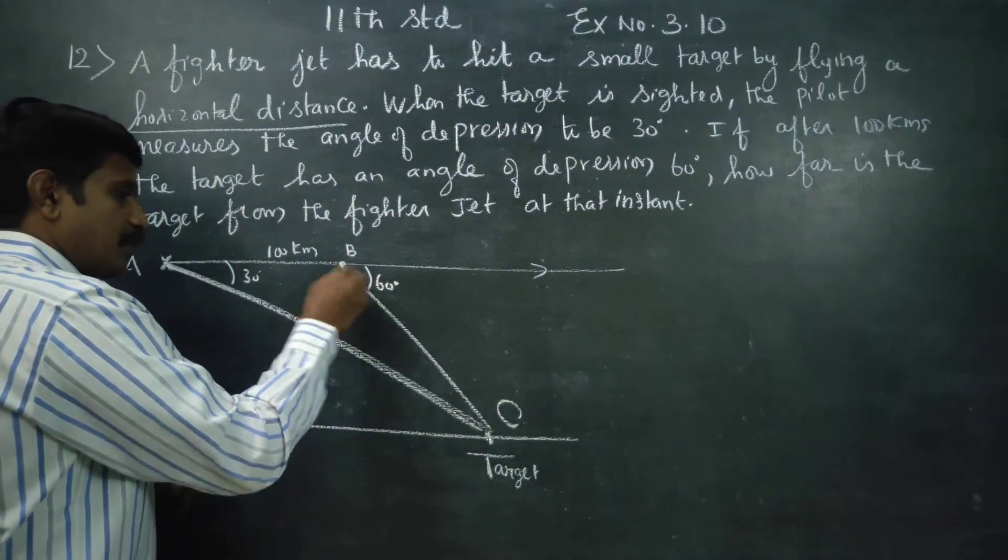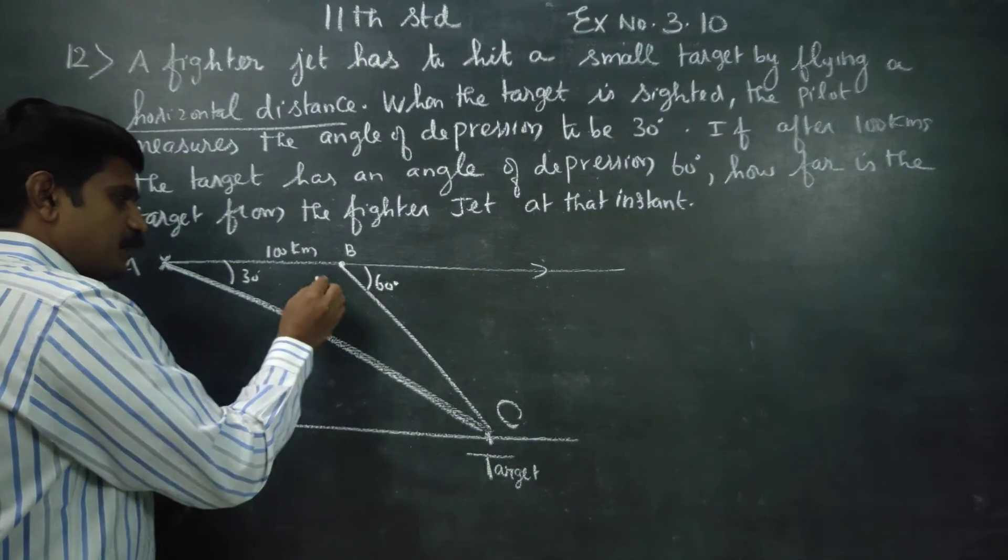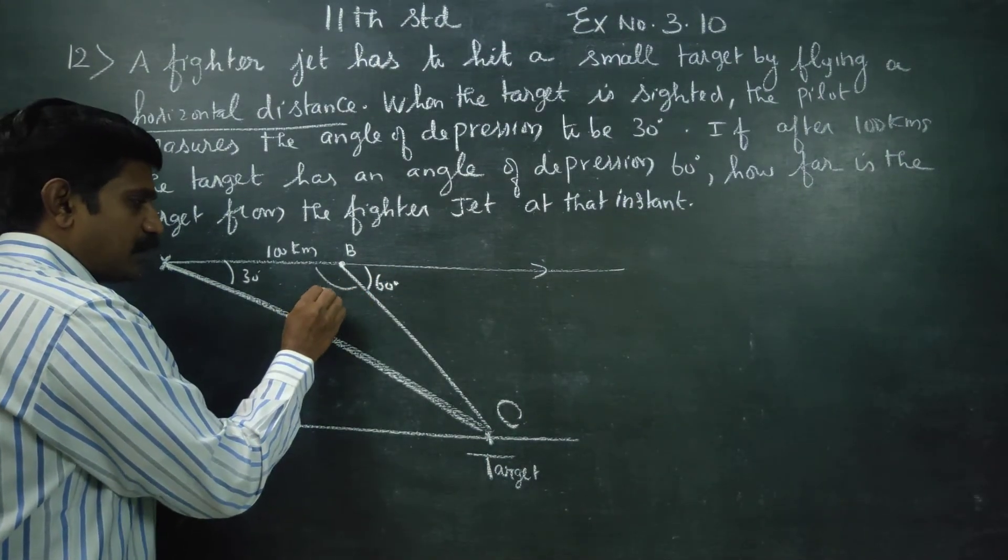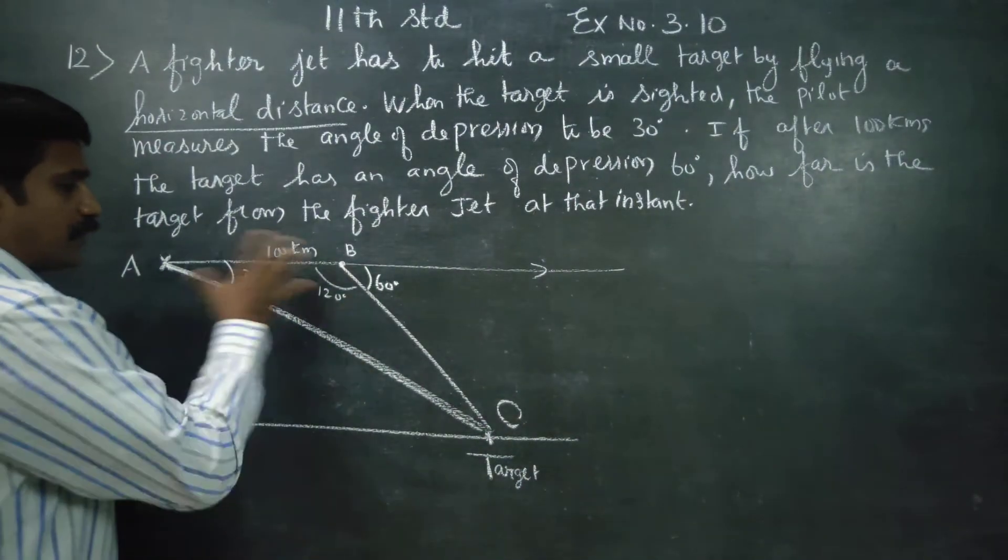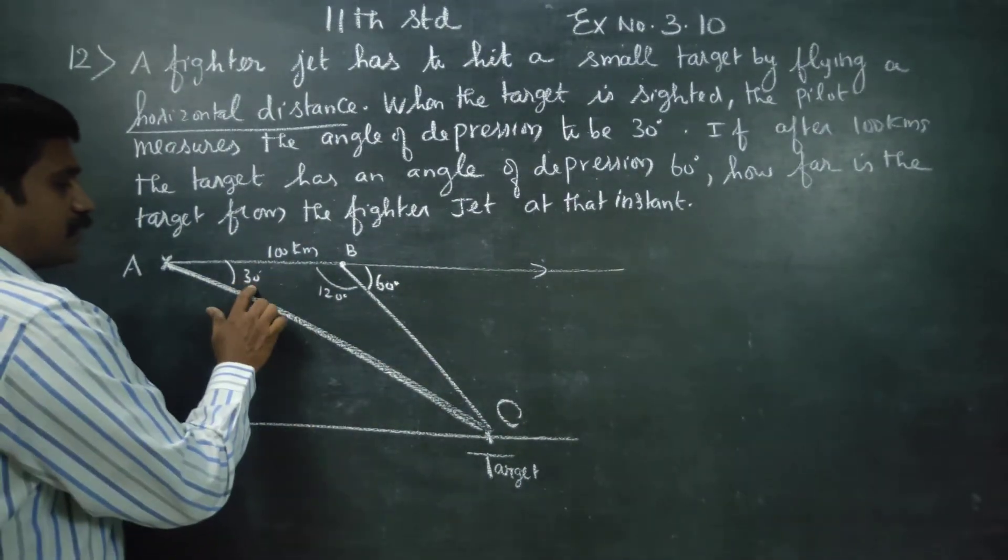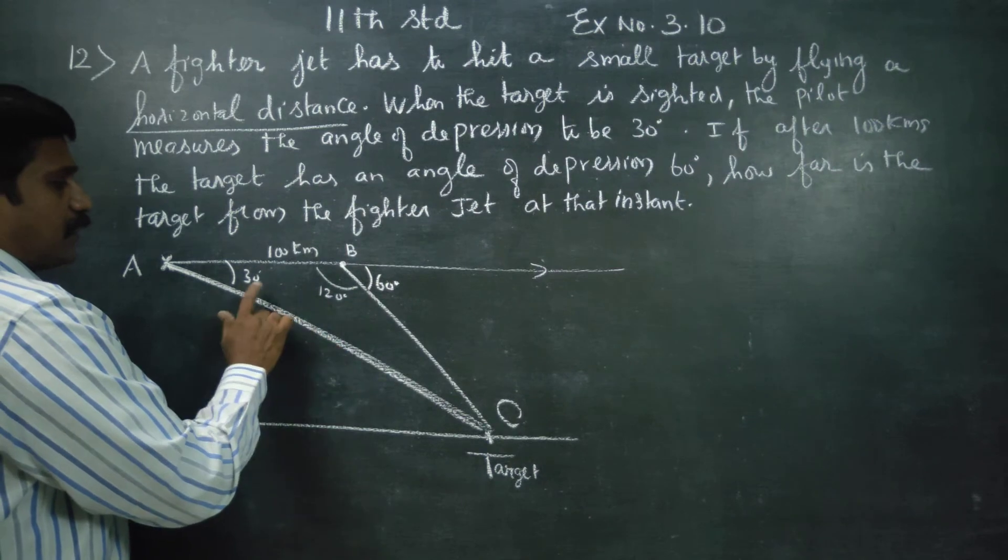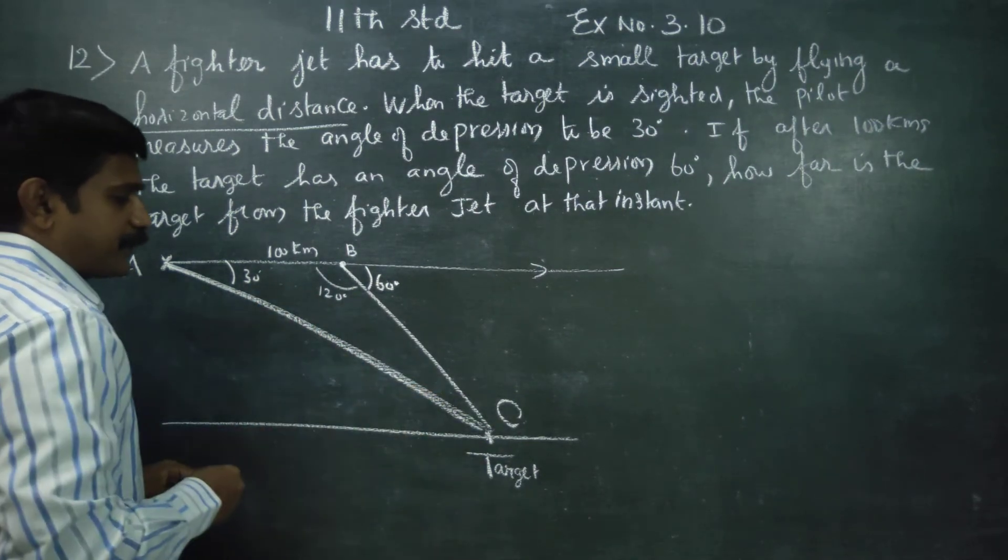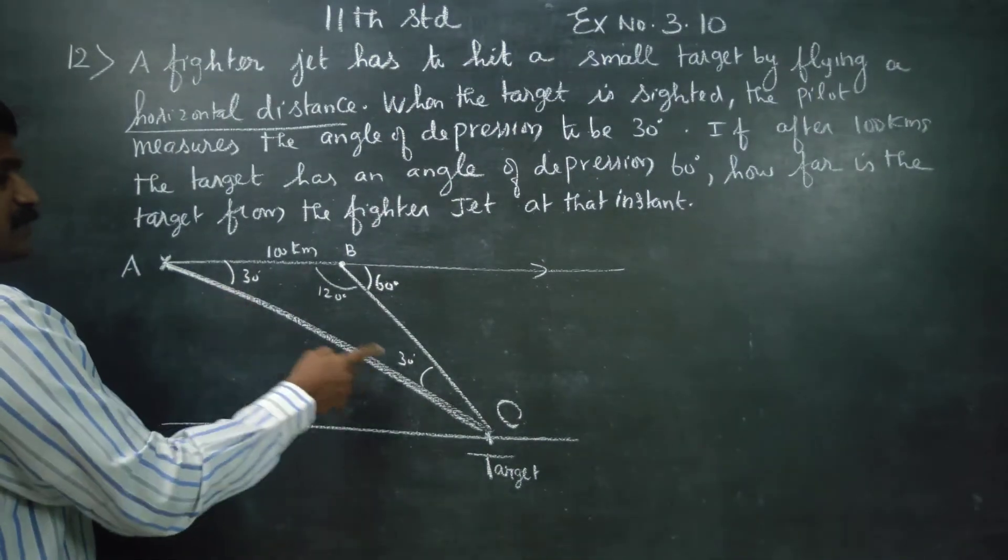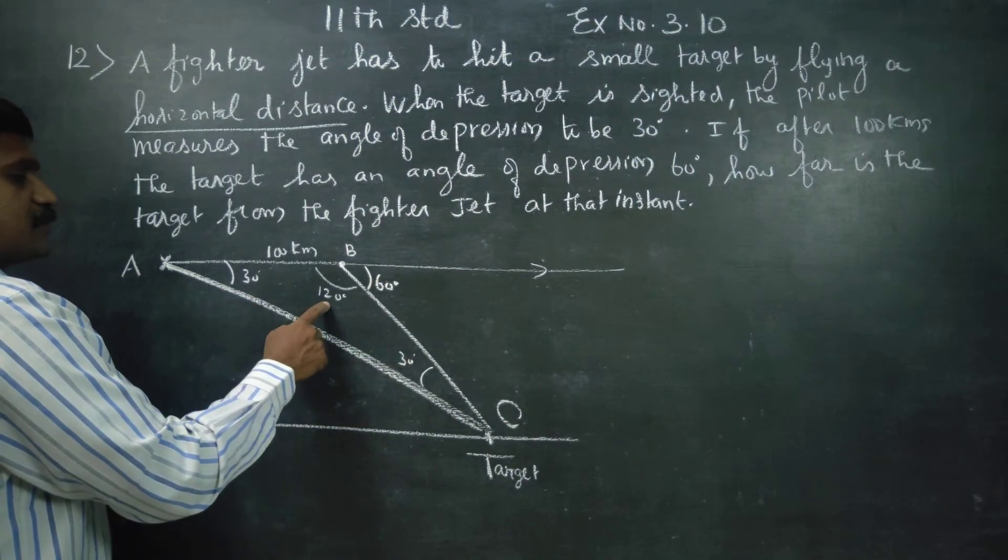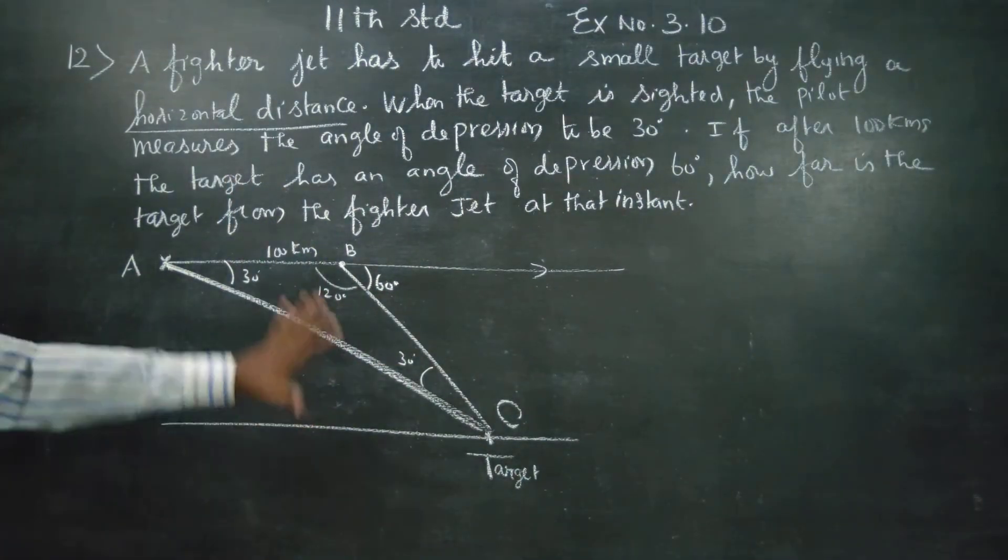Straight line total is 180 degrees, so the balance is 120. In one triangle, the total is 180. This is 30, this is 120, so this will be 30. Add 30 plus 30 is 60, 60 plus 120 is 180. Now all angles are ready.